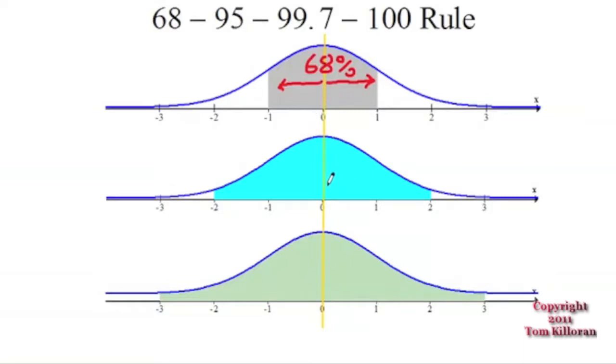If you move two standard deviations away from the mean in both directions, positively and negatively, you'll contain about 95% of the people, the data, whatever you want to call it, in between two standard deviations away from the mean.